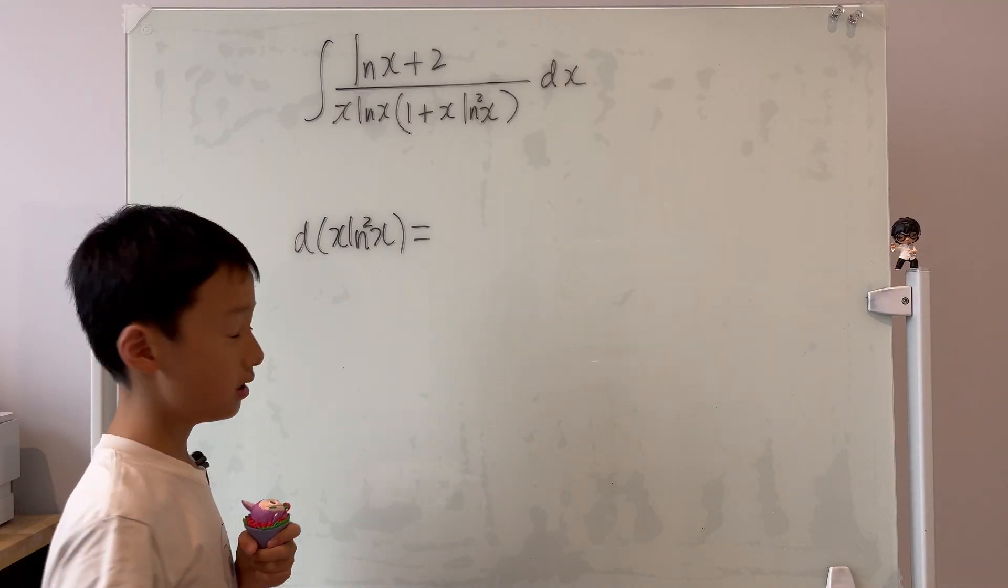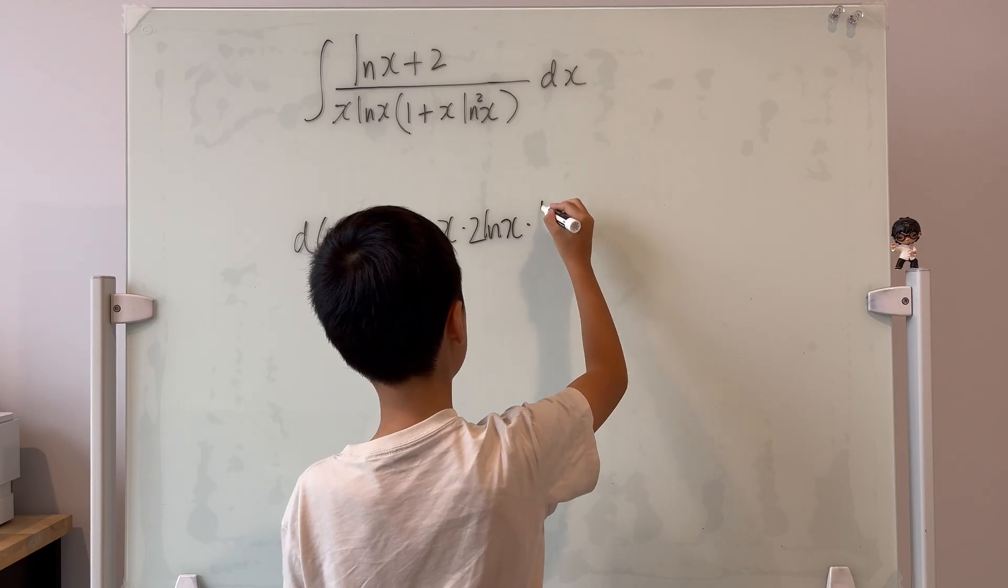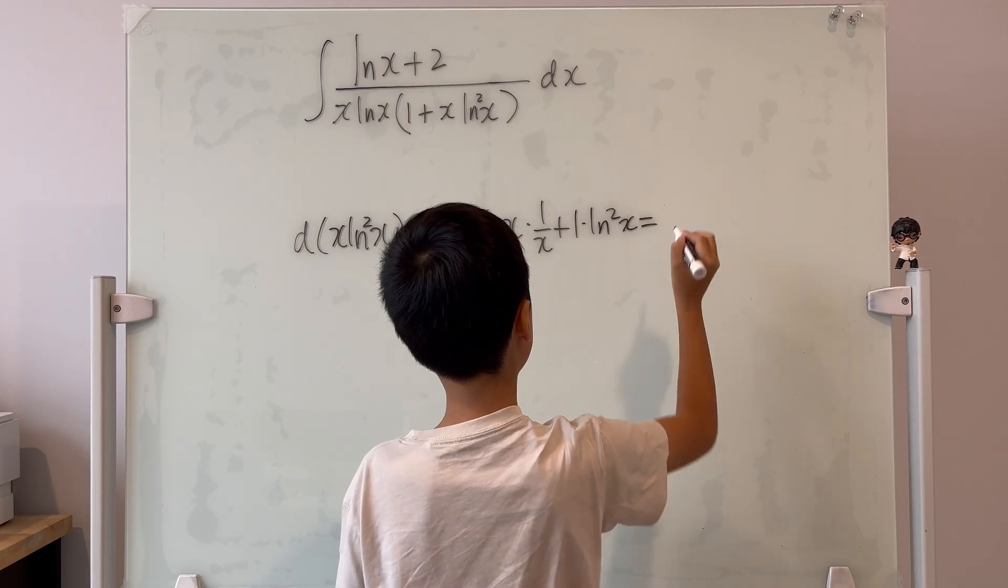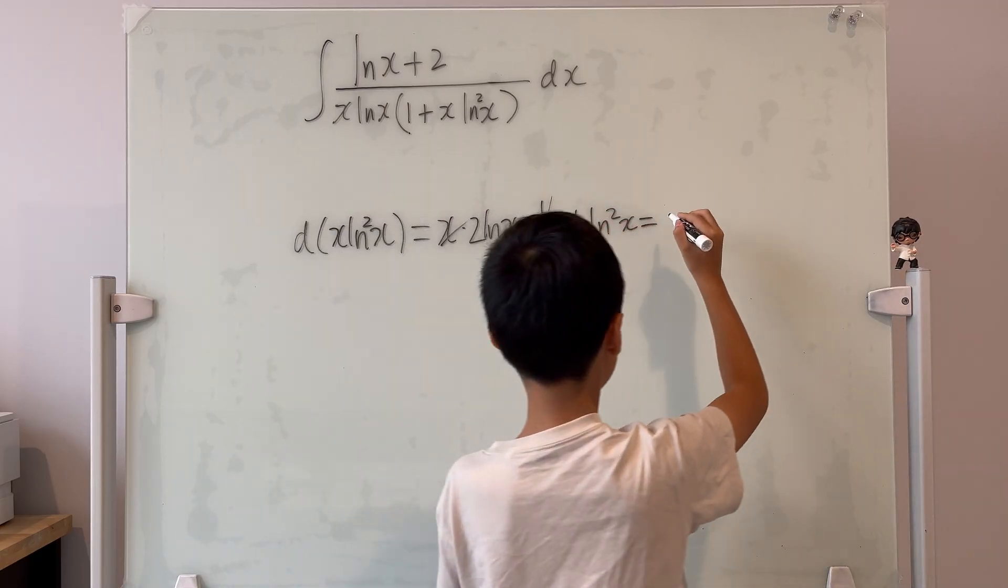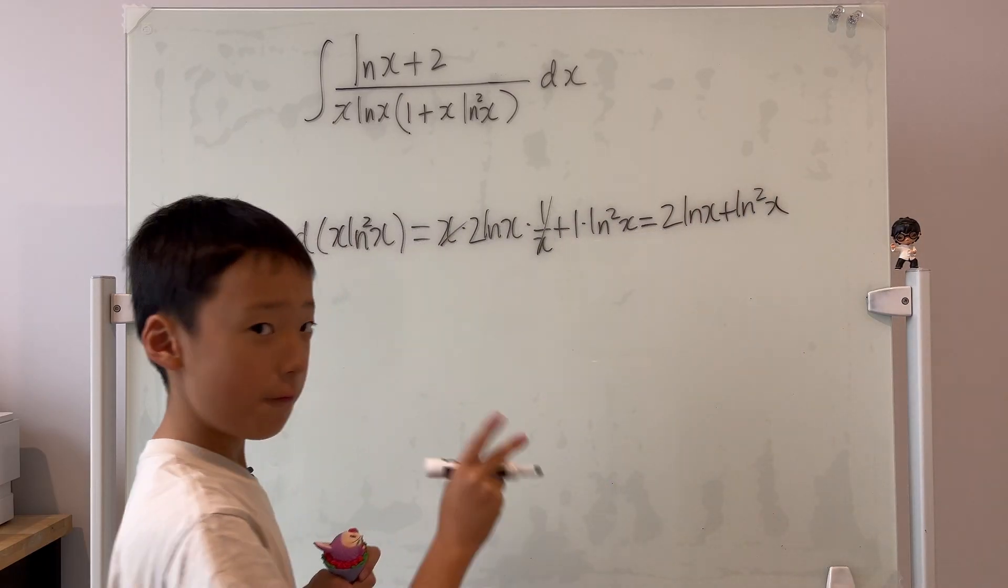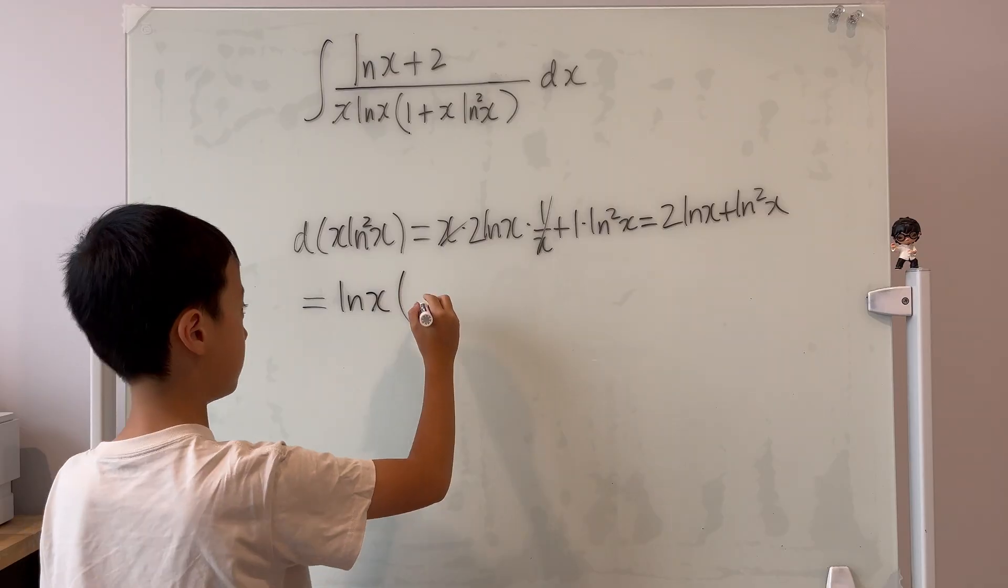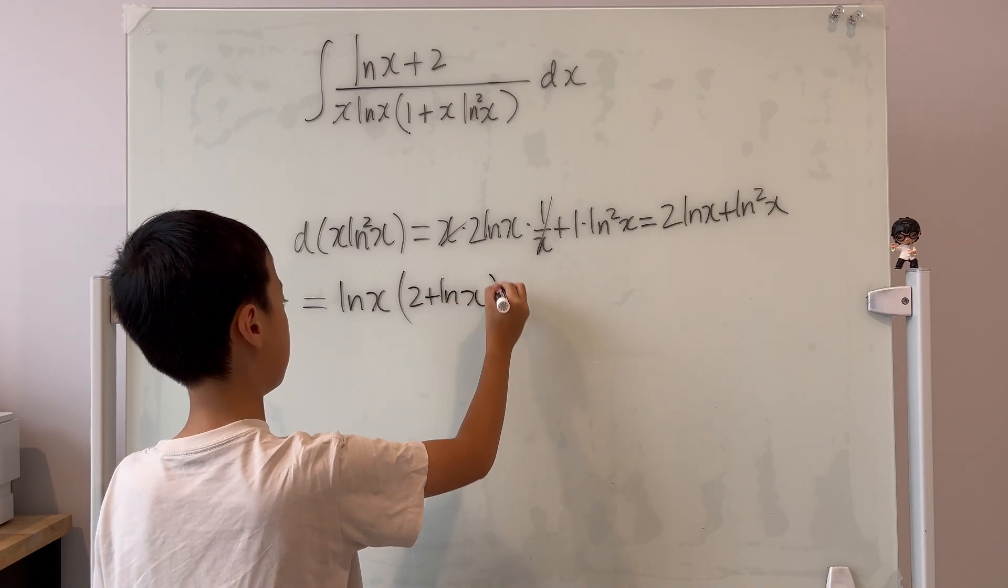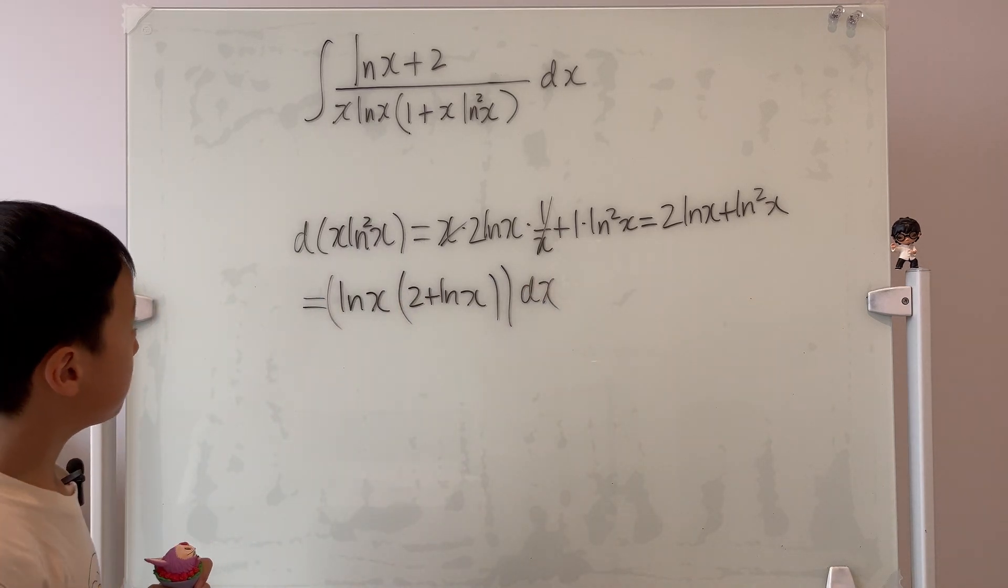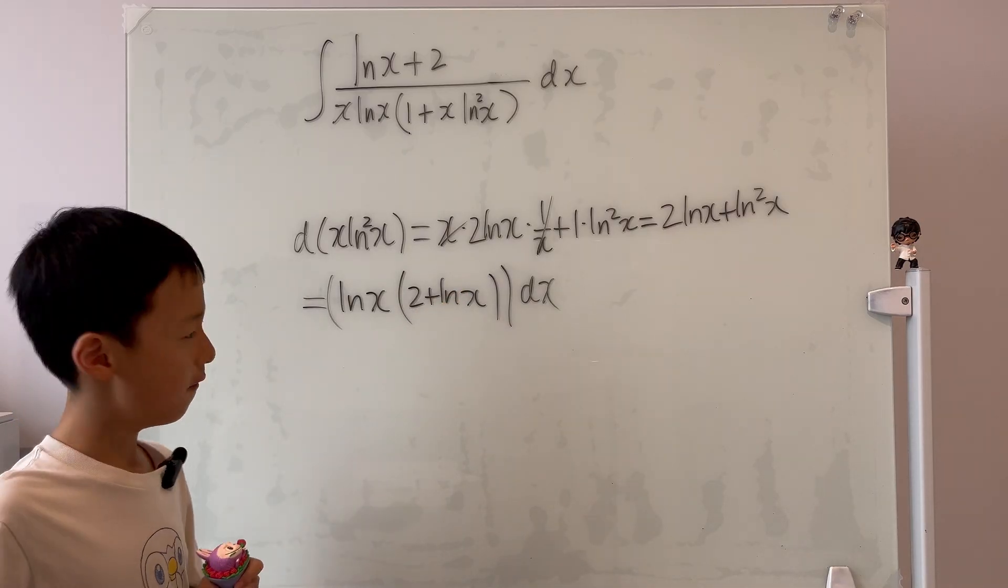So, it'll be equal to, you do the things you need to do, and this and this cancels. So it's 2 ln x plus ln x squared over x. And we can factor out a ln x, so it becomes ln x times 2 plus ln x, bracket x. Well, well, well. Look at the numerator, ln x plus 2. Look at here, the very inside bracket, ln x plus 2. Very nice.